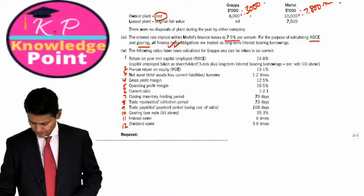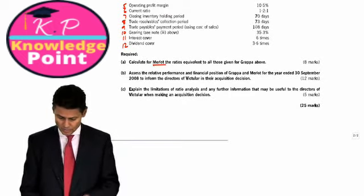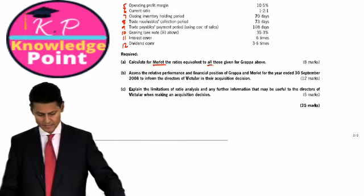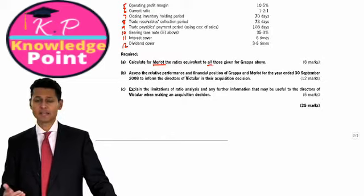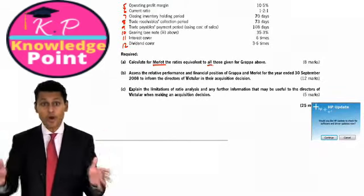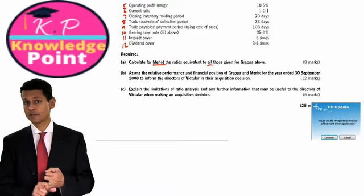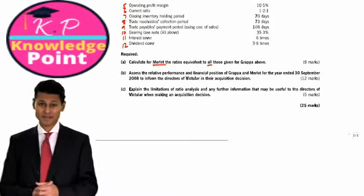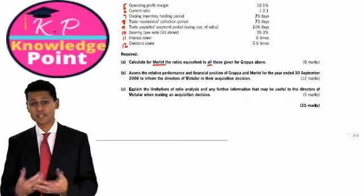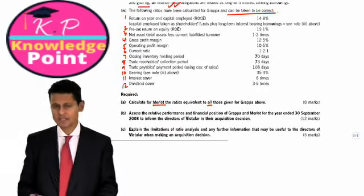Then the question says, calculate for Merlot. So who are we calculating this for? Merlot, the company on the right, the ratios equivalent to all those given for Grappa. He says in his feedback, amazingly, a certain number of candidates, a sizeable minority, actually did the calculations not for Merlot, but for Grappa. The wrong company! Can you believe that? It must be either exam nerves or people just don't read questions carefully enough. It says there, can be taken to be correct. You can't check the examiner. For the first ratio, return on capital employed, the denominator is given, so it's not a problem.